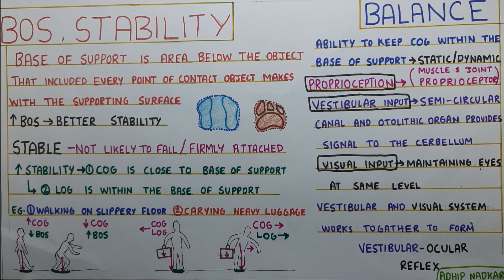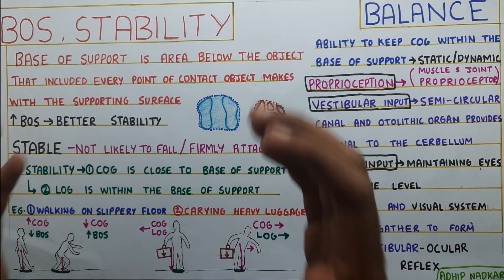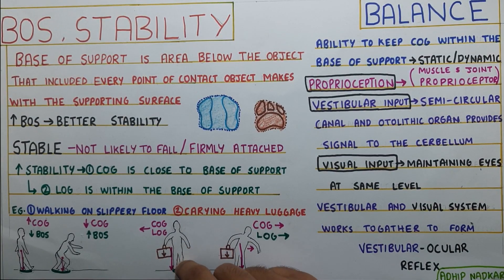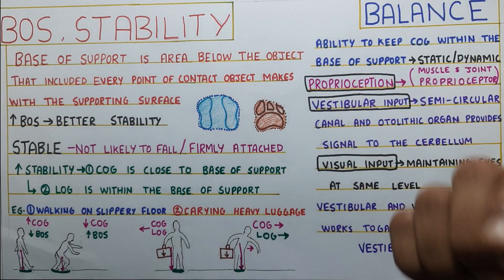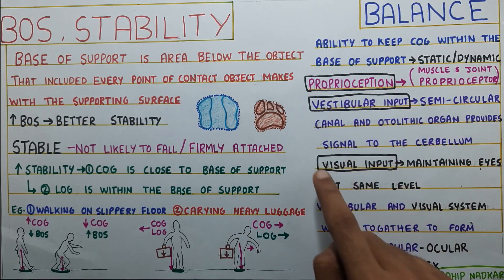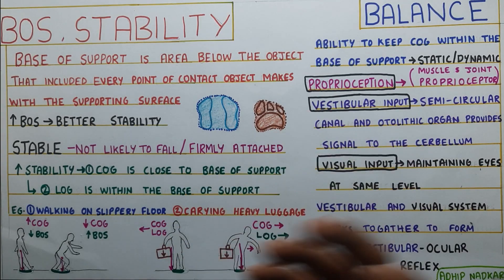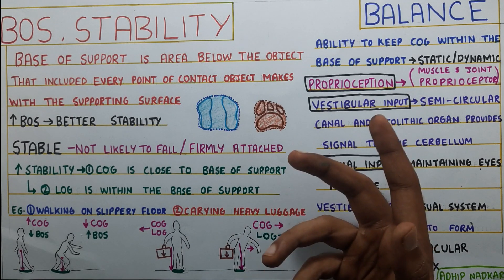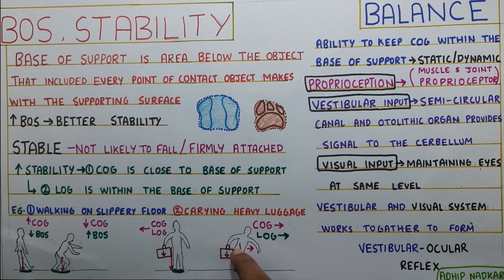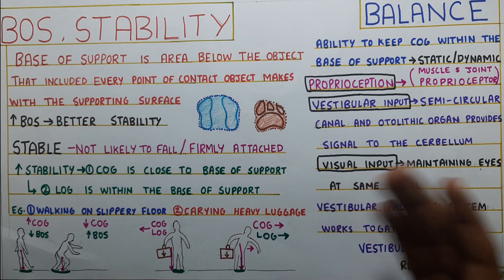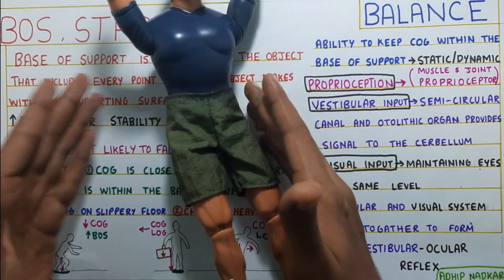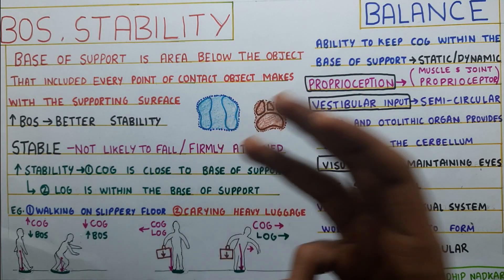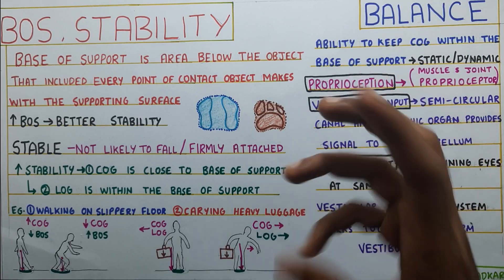Now that we have understood stability, what is the use of it? Basically, we can reduce stability to train balance — that is the key connection. When we reduce our stability, we can train balance, which we achieve through proprioception, vestibular input, visual input, and some amount of muscle strength. Balance can be trained by reducing your base of support and challenging your center of gravity — by giving weights on one side, or by giving perturbation, which is a sudden disturbance movement. By reducing base of support, giving perturbation, and giving weight on one side, we can challenge and train a person's balance.